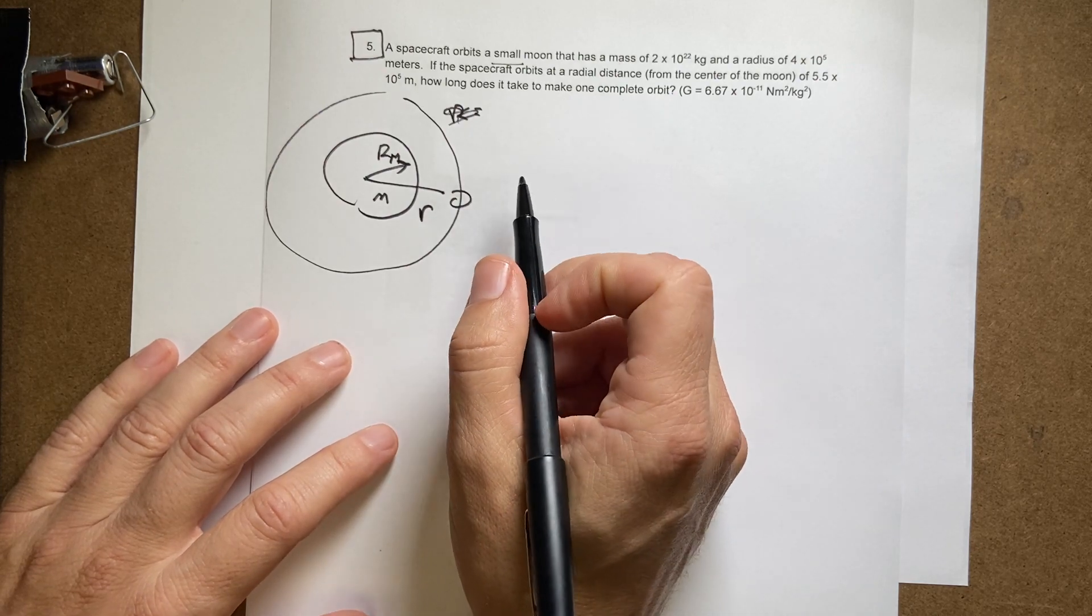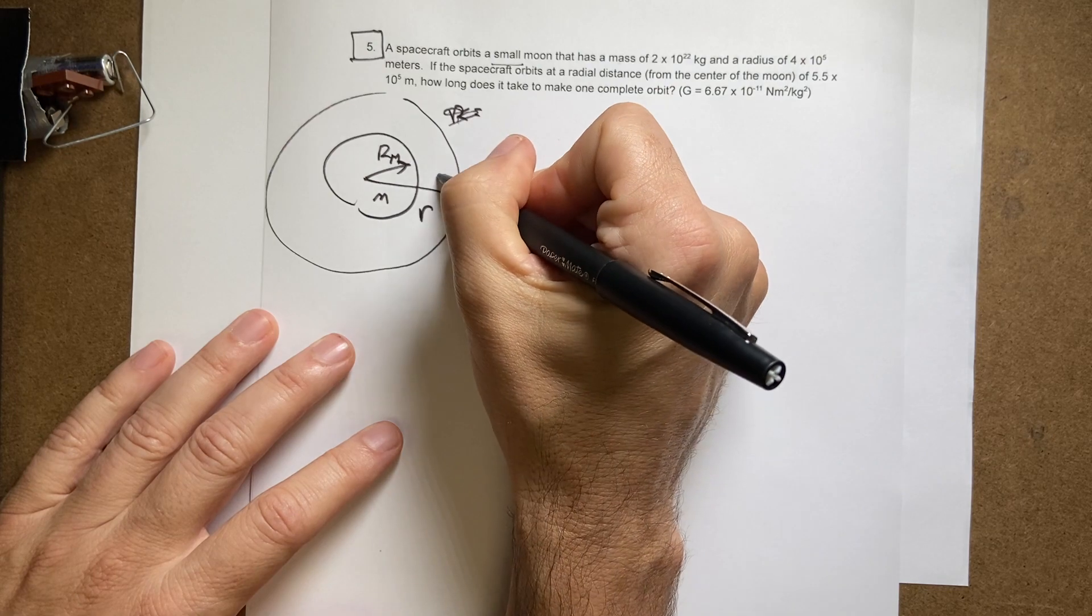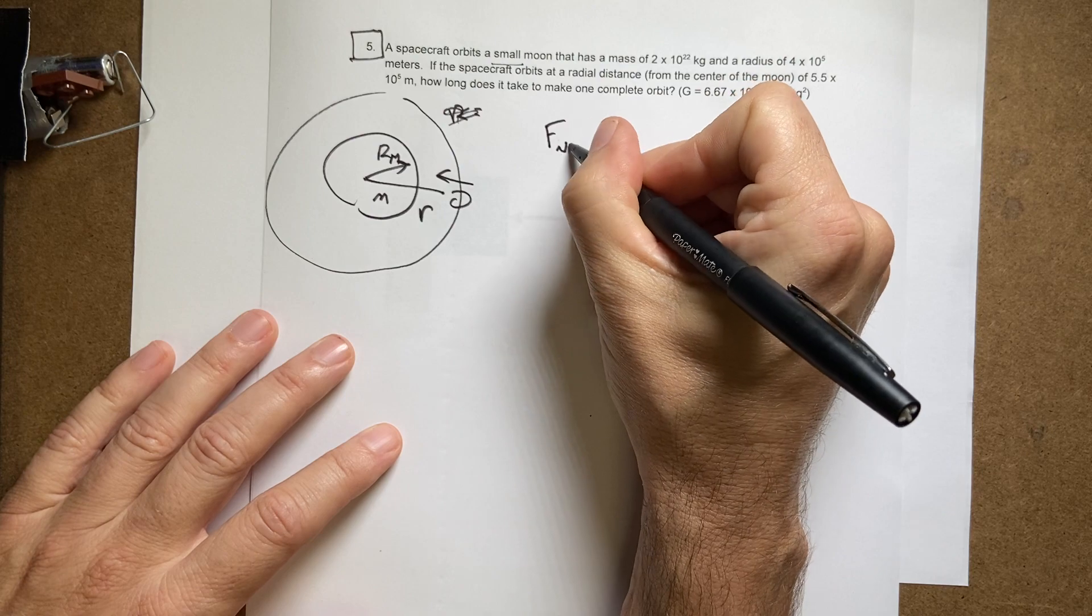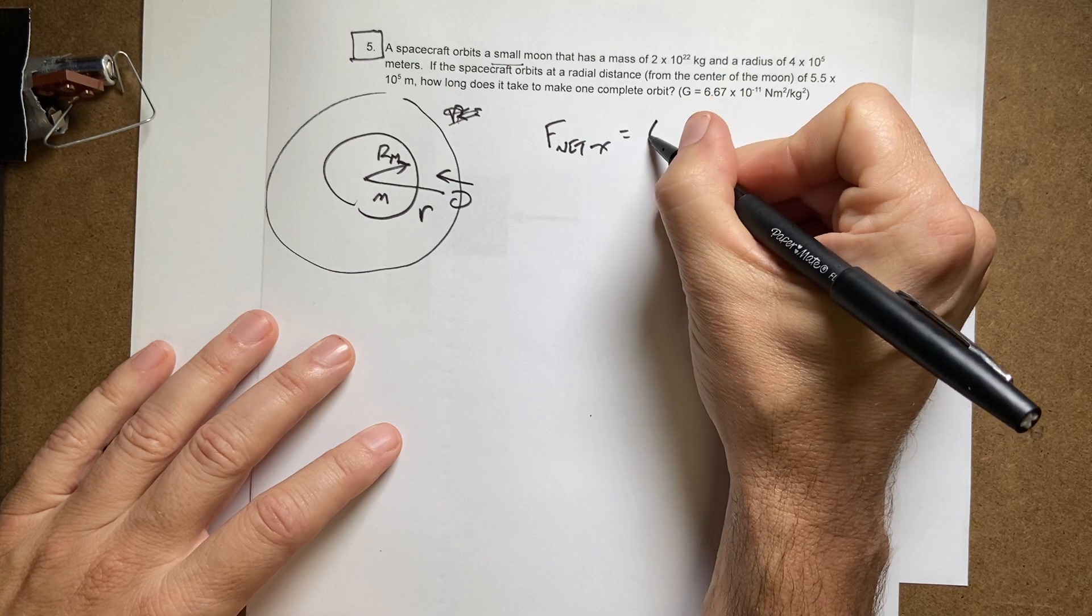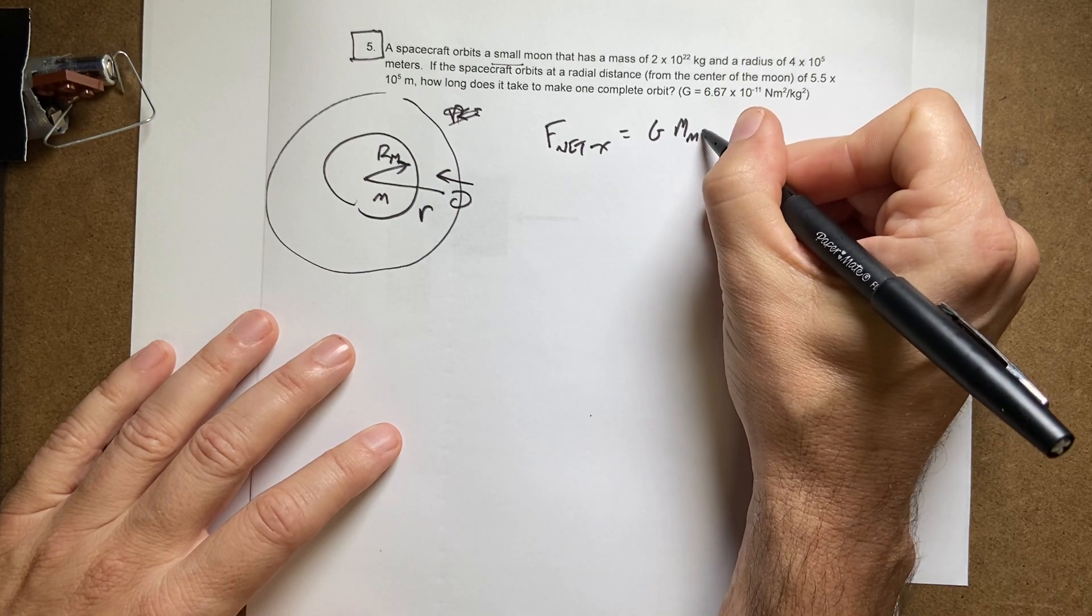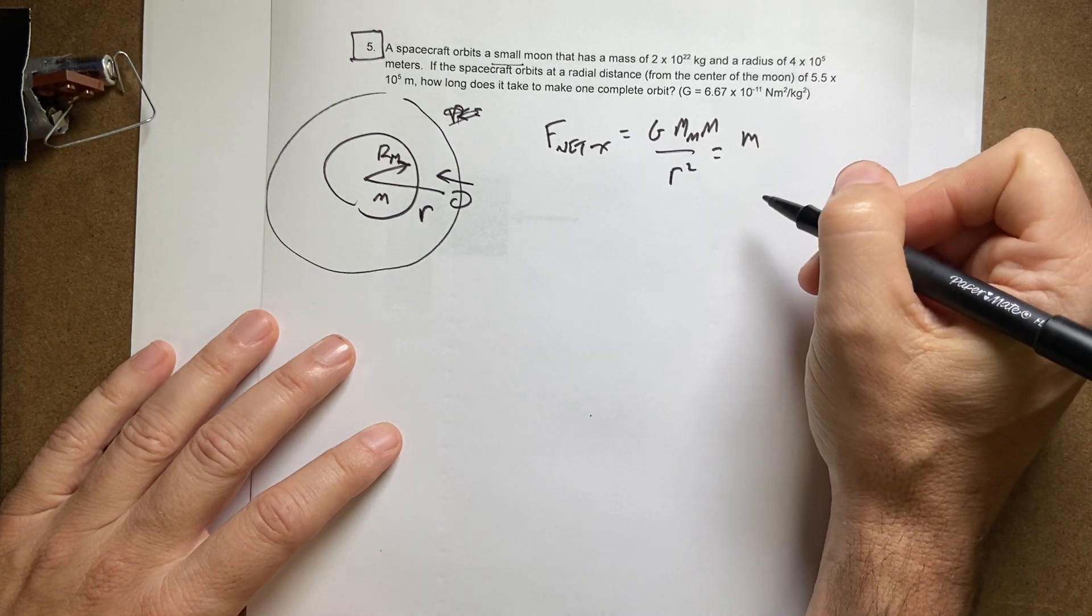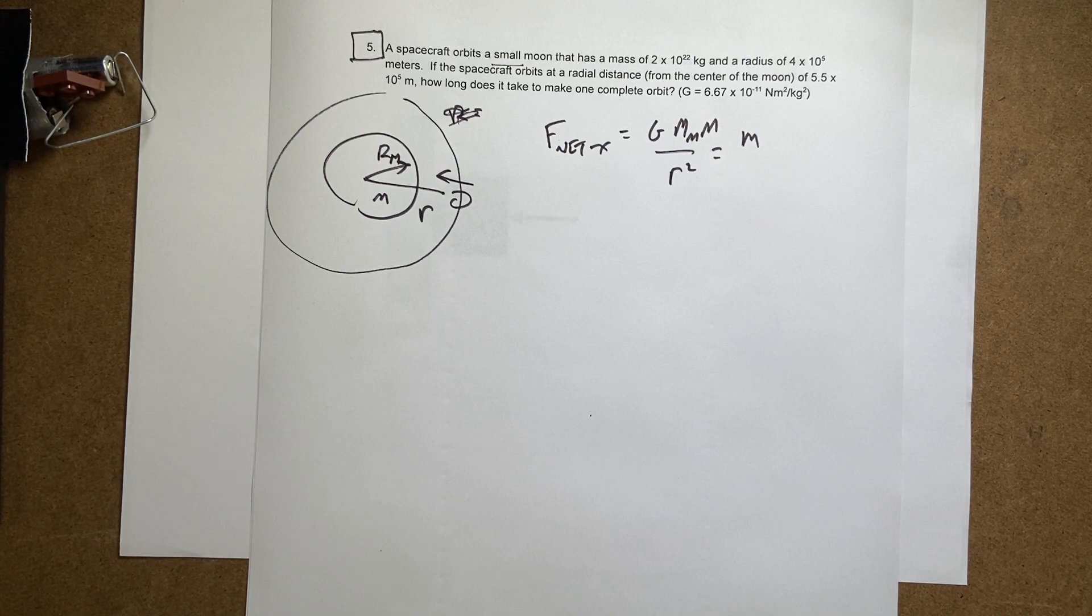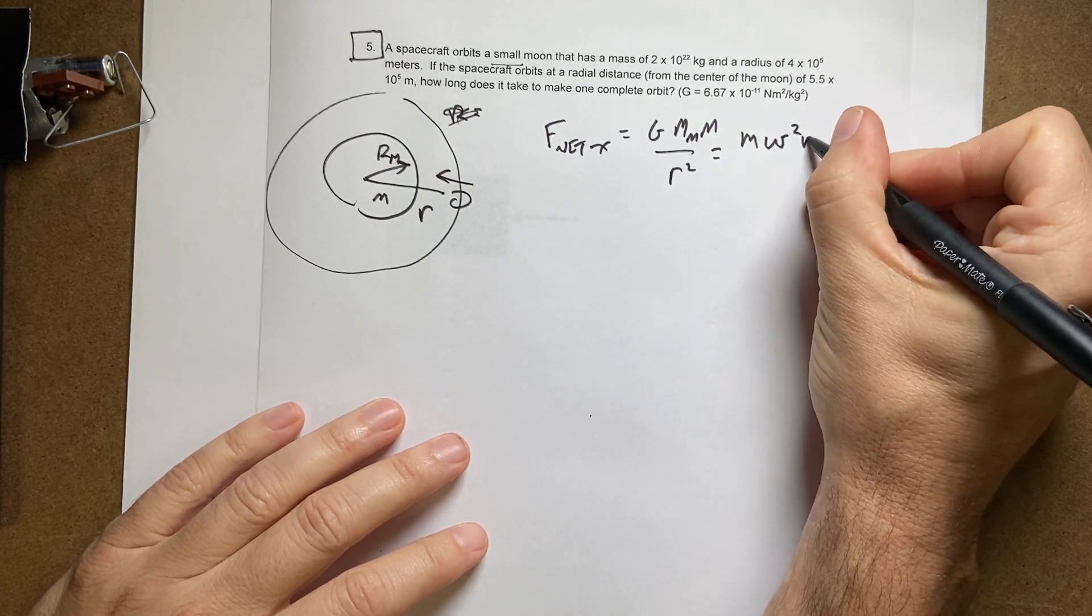How long does it take to complete one orbit? Okay, so in this case I have one force acting on the spacecraft and that's the gravitational force. So I can say F net equals the gravitational force which is G mass of the moon mass of the satellite over r squared and that's going to equal mass of the satellite times acceleration. Now I could do v squared over r, but if I solve for the angular velocity it's going to be easier to find the time to complete one step, so I'll use omega squared r.